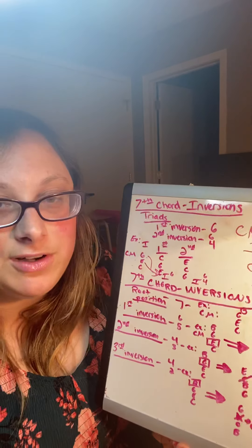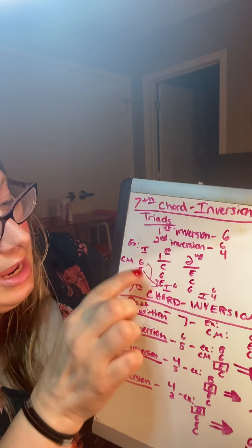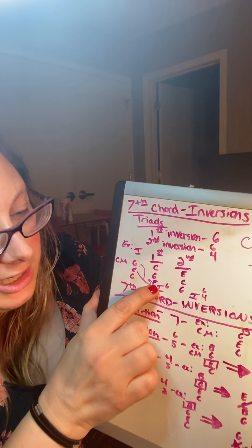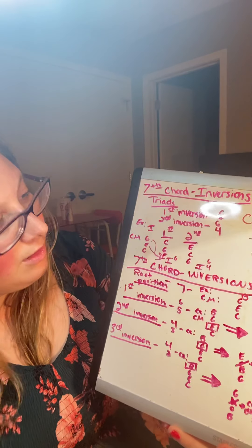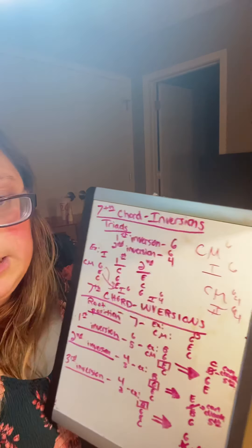So a first inversion means that you're going to take the one in the middle, the letter in the middle, E, and that's going to become your bottom number, your base letter. So it'd be E, G, and C. And that is marked by written a six, a tiny six above.